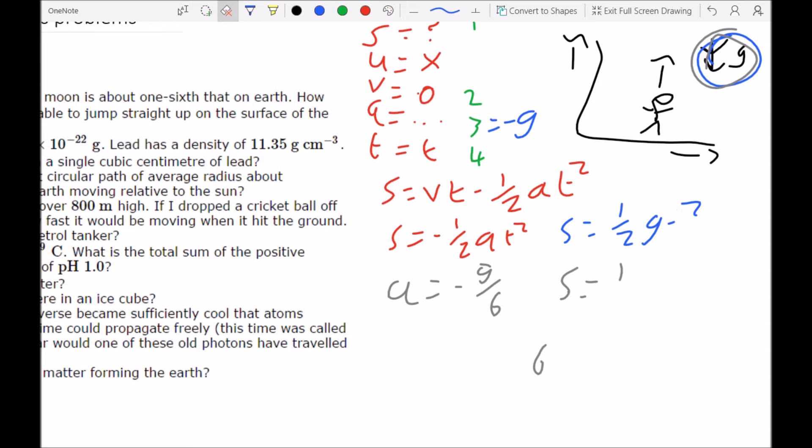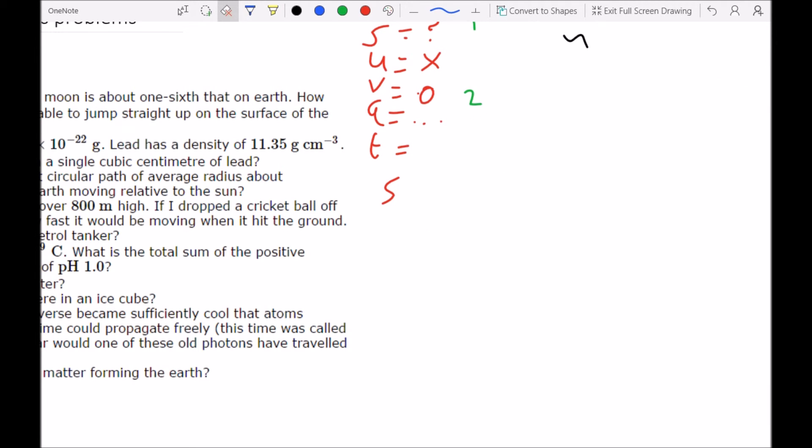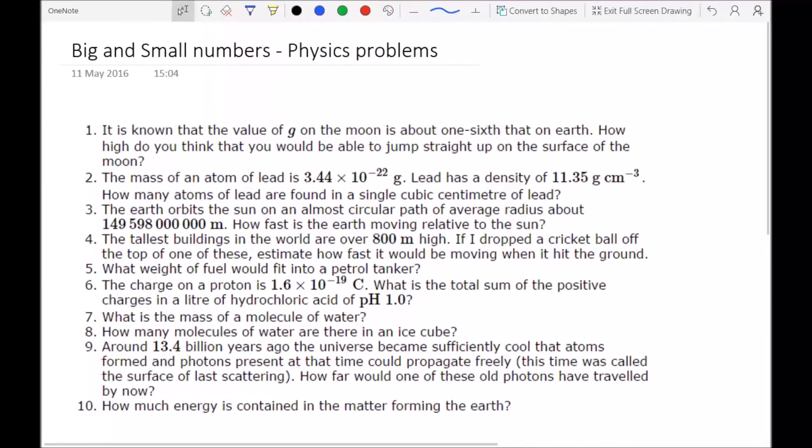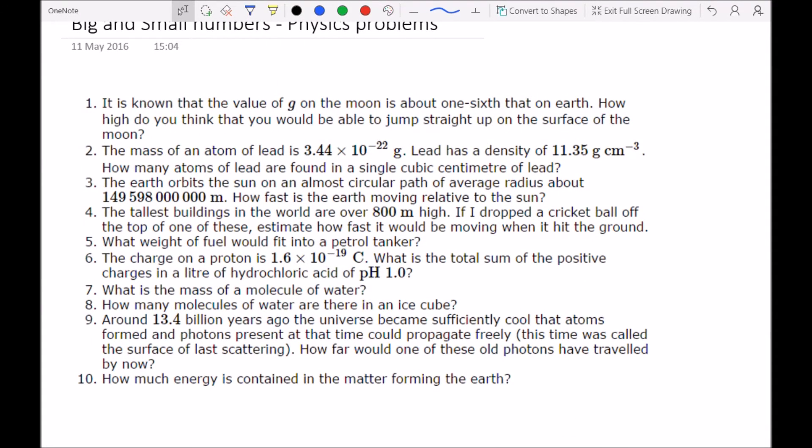So even if you're not aware of SUVAT, you can take a bit of an educated guess with the question. You know that the acceleration due to gravity is something that slows you down, so it's going to make you jump a shorter distance. So if you just use logic and look at the value it gives you in the question, one sixth is the only value, you know that there's got to be some sort of inverse relation between acceleration and the height jumped. So if you've got a sixth of the gravity, then the height is likely to be multiplied by six.